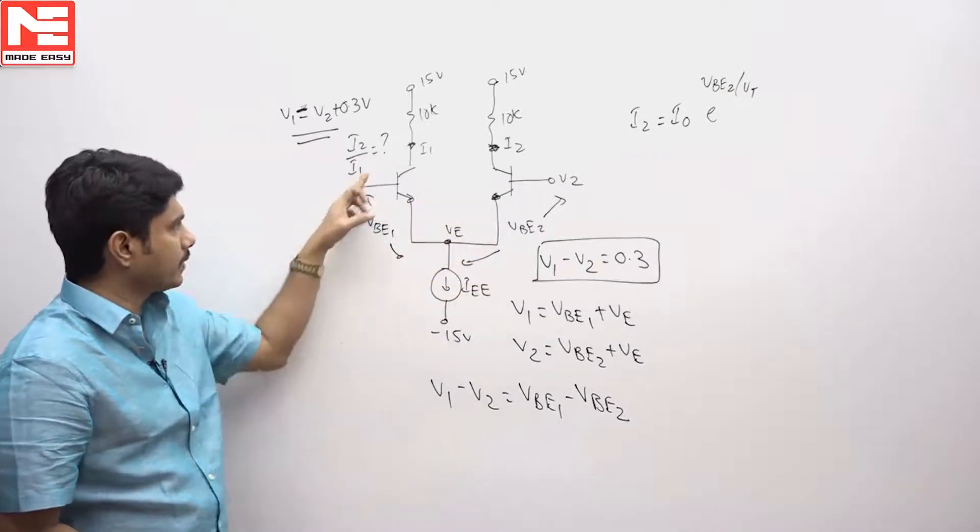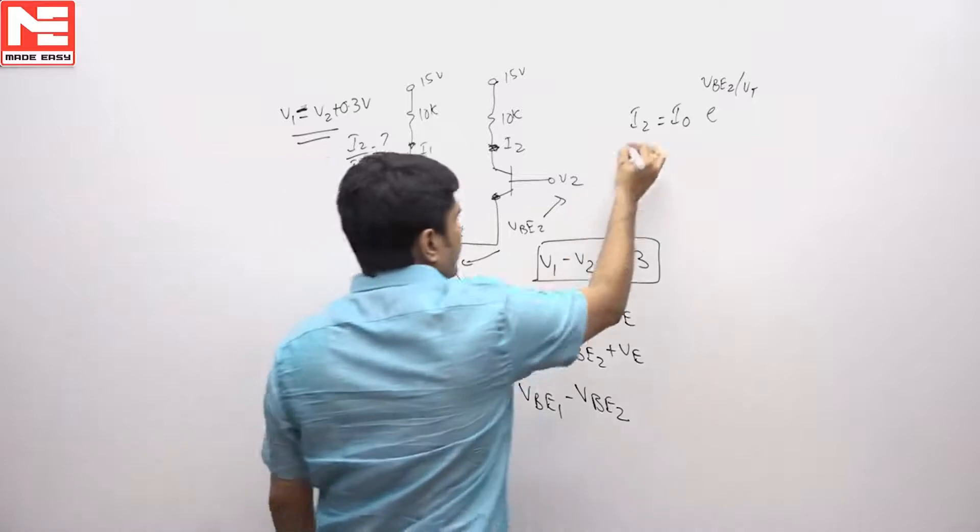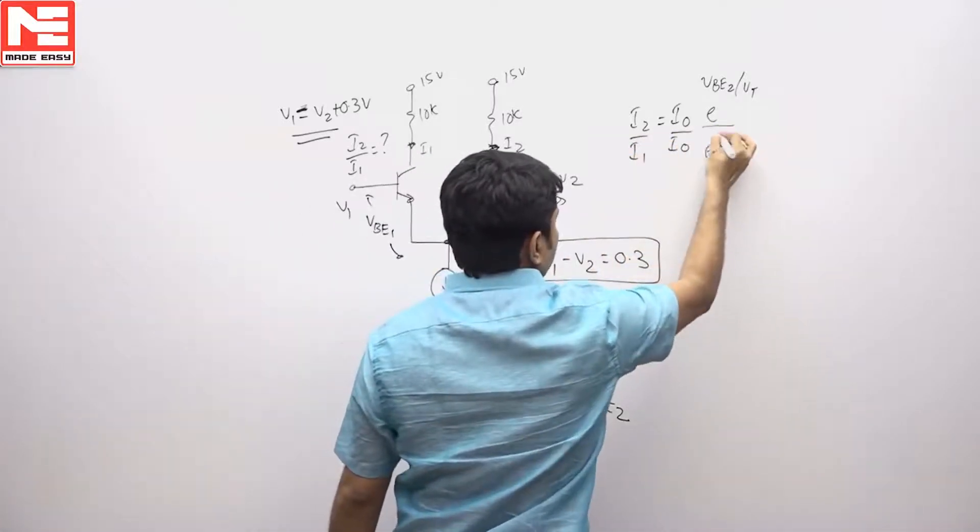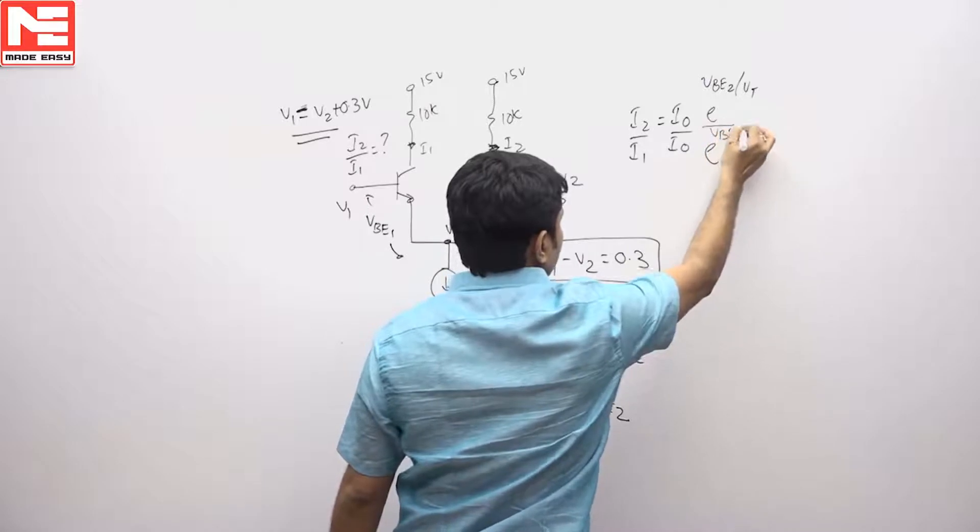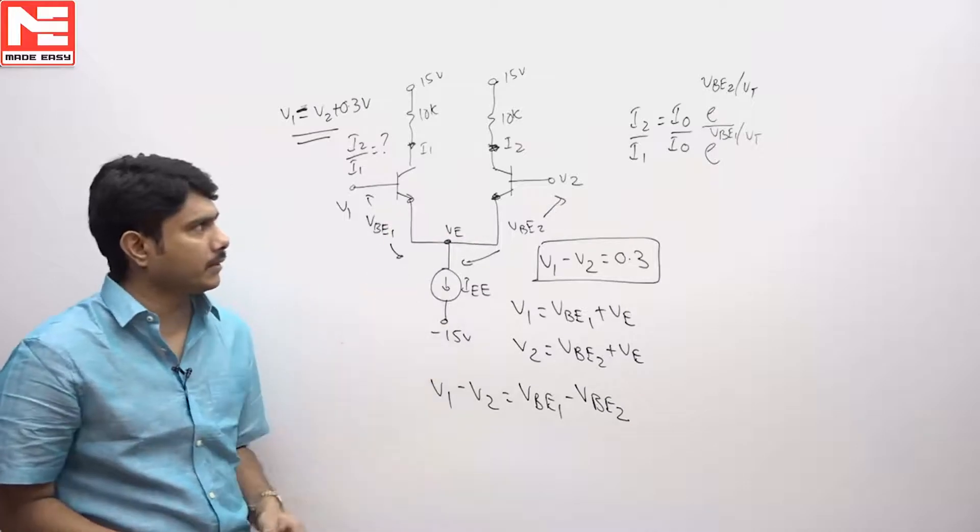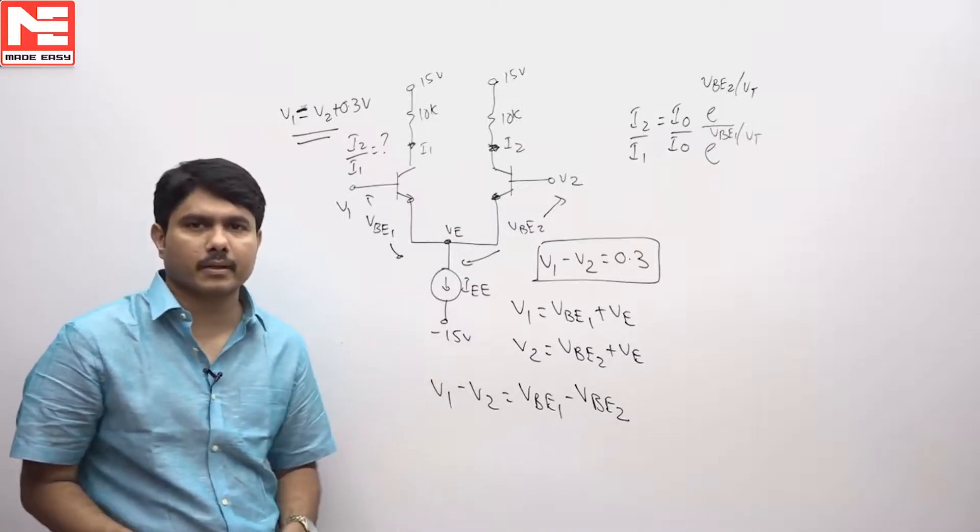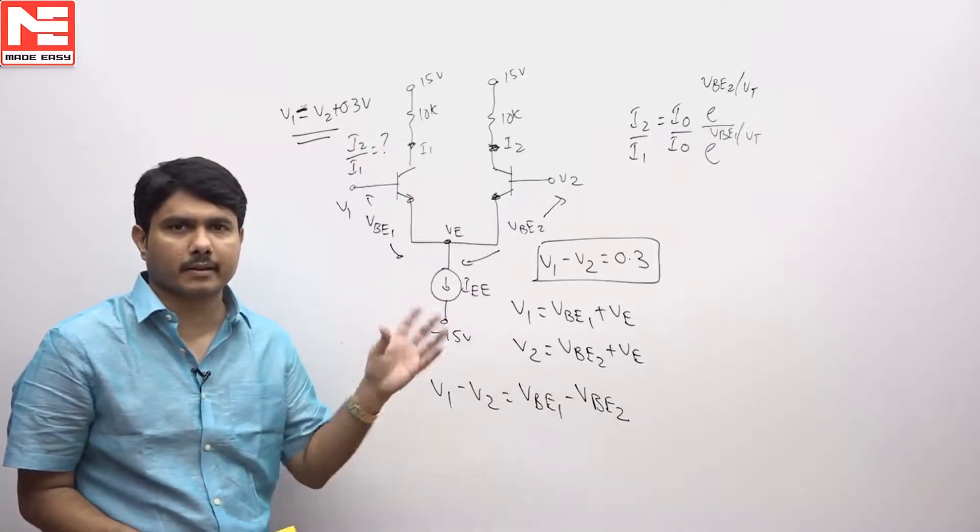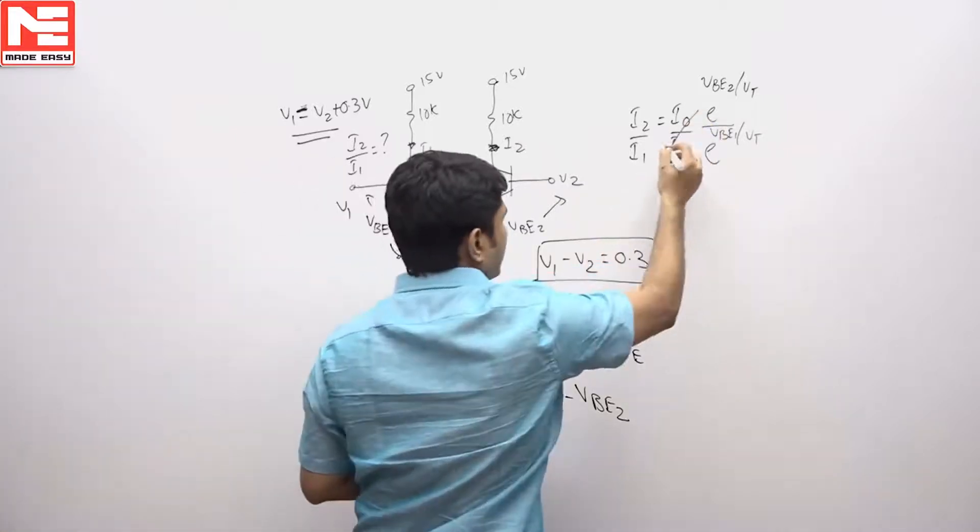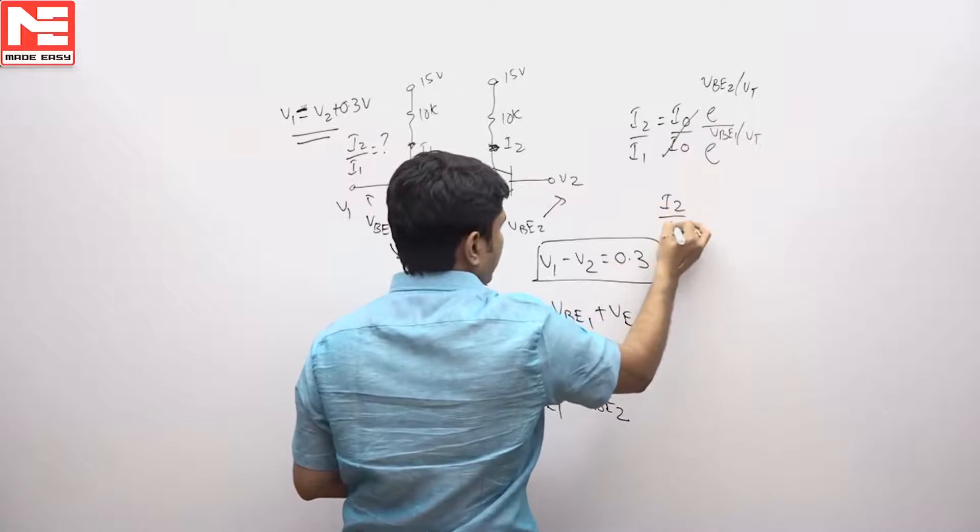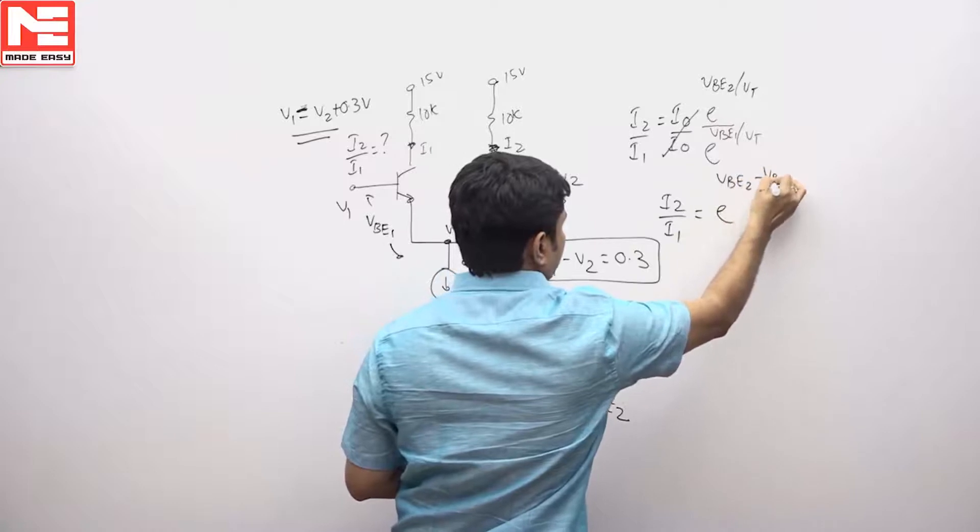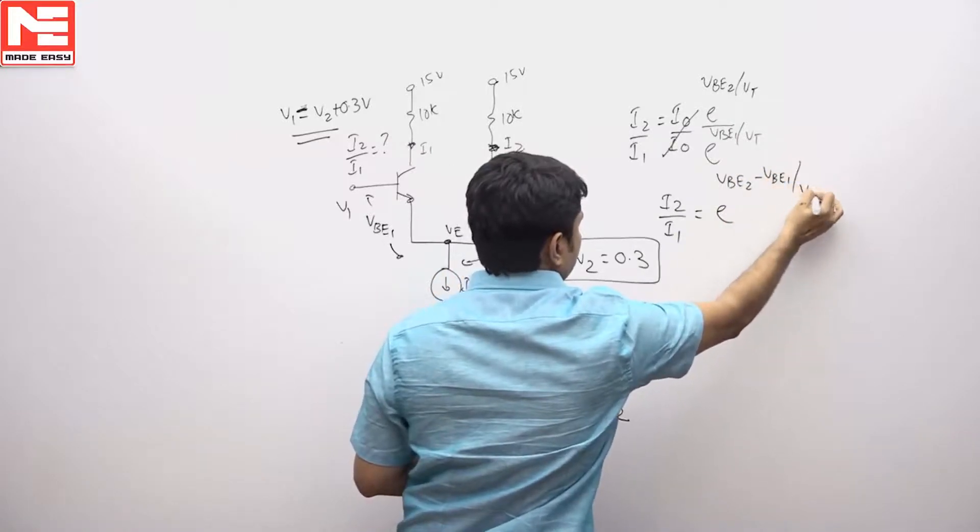This is the first diode current equation. Therefore I2 by I1 equals I0 times E power VB1 divided by VT. So currents are different, voltages are different, but I0 and VT will be the same because they are related to temperature. So I0 will be canceled. So I2 by I1 equals E power VB2 minus VB1 divided by VT.